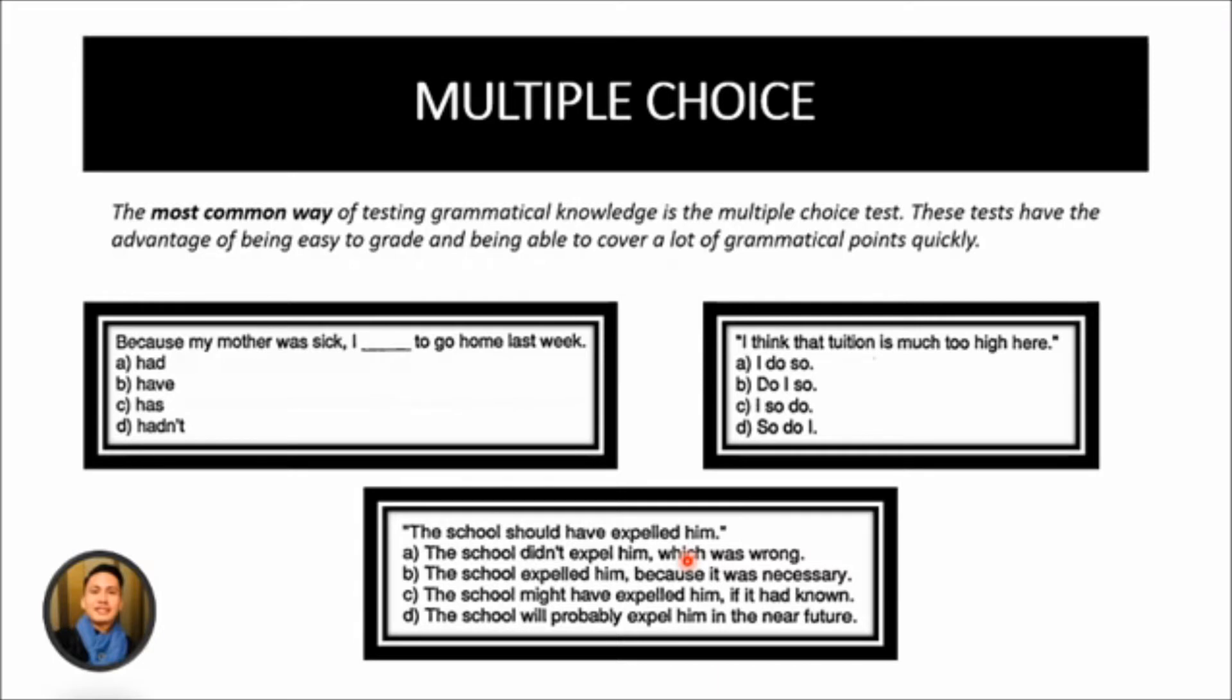The technique here is that the test maker must find a balance between giving enough context and giving too much. One way to give more context and make the language more natural is to give the items in the form of short reading passages rather than individual sentences to create this overall scenario.